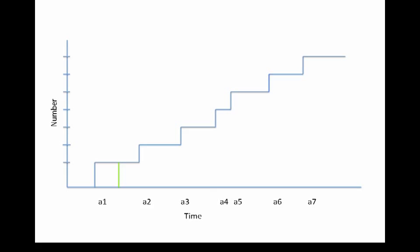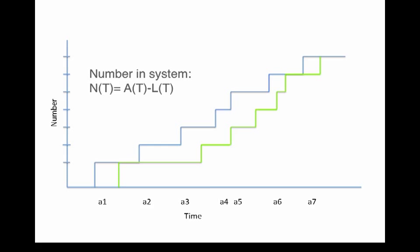Let's keep track of number of arriving customers over a time period. Here comes customer one, customer two, and so forth up to seven customers, and let's see when they're leaving the green line. The number of customers in the system is then A of T minus L of T, and at these points the system is empty.